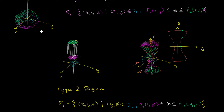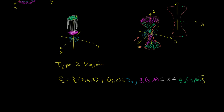Now let's think about some of the shapes we explored. We saw that the sphere and the cylinder were type 1 regions, but this dumbbell, the way that I oriented it here, was not a type 1 region. Let's think about which of these are type 2 regions, and what might not be a type 2 region.